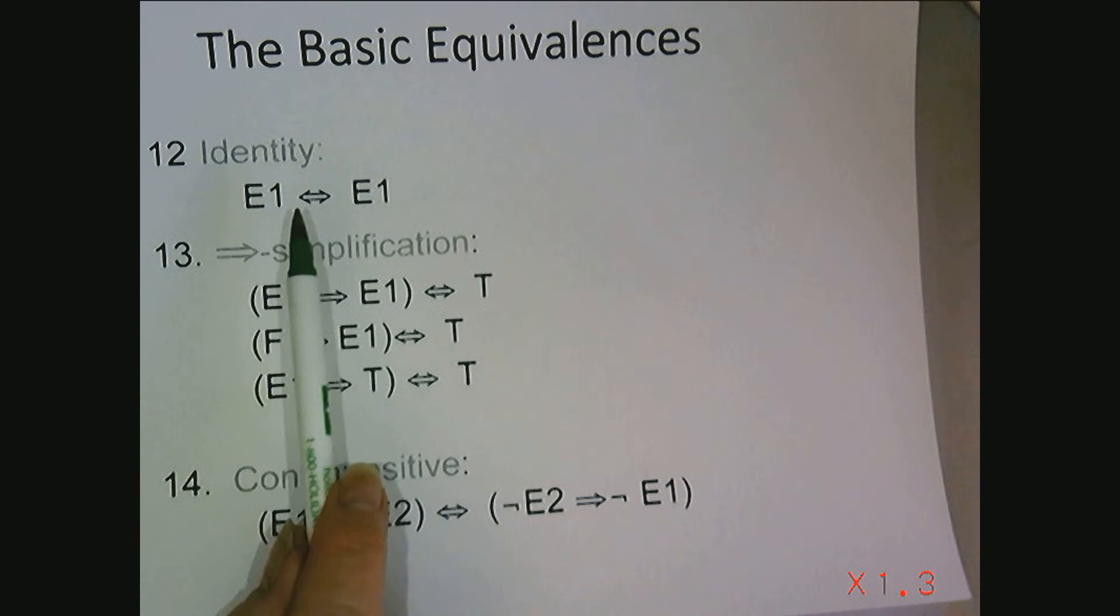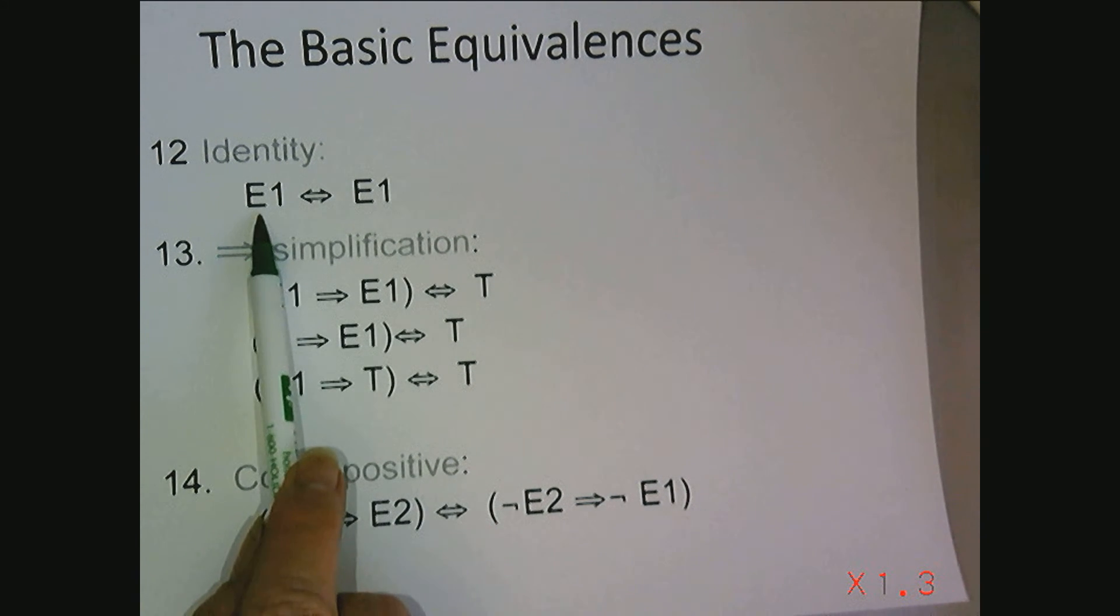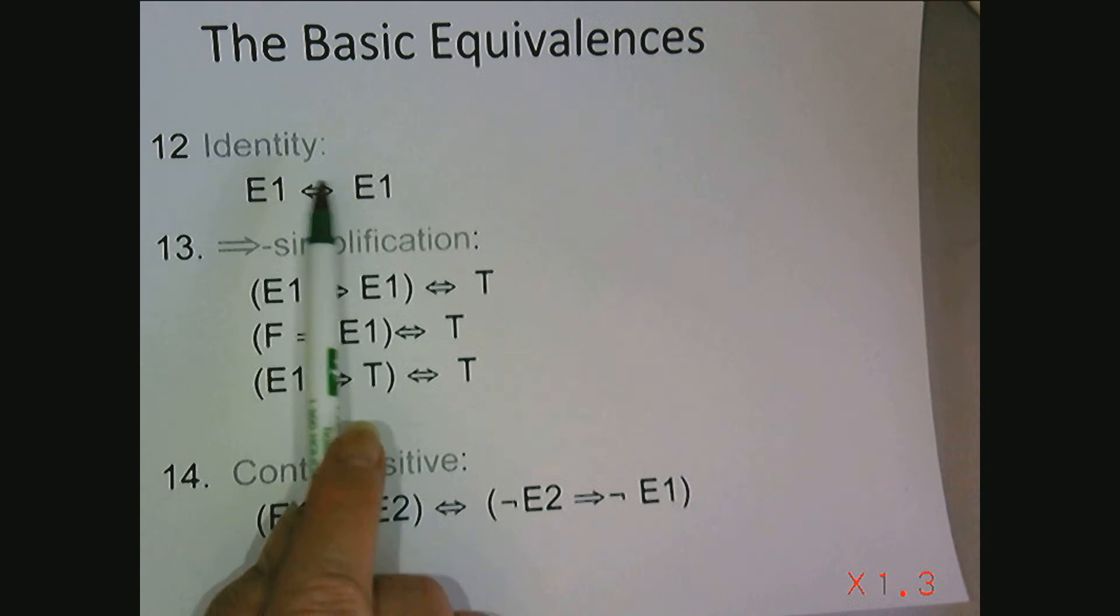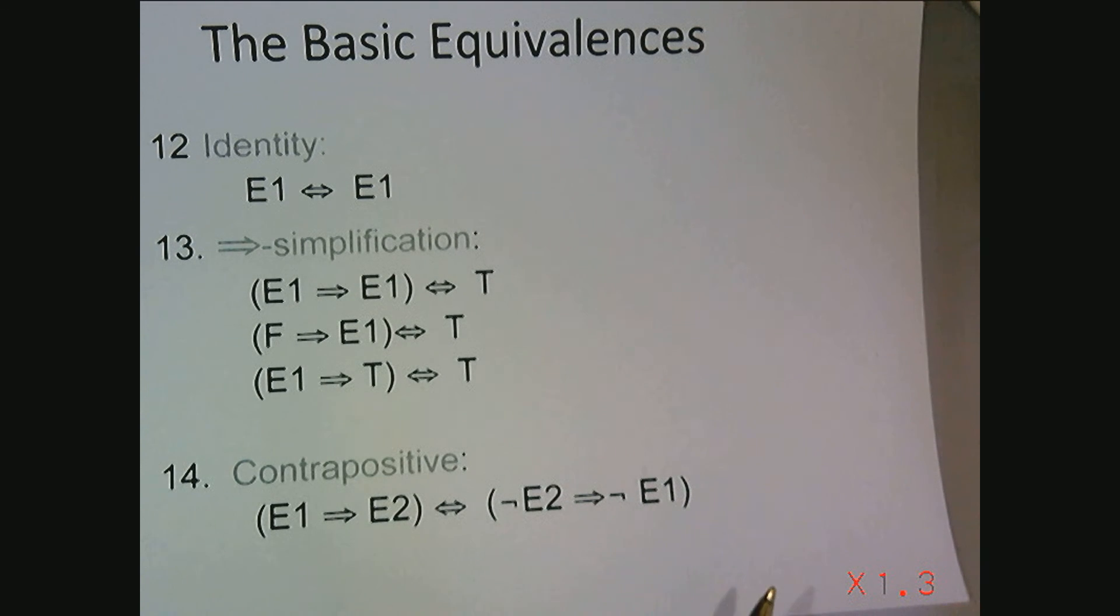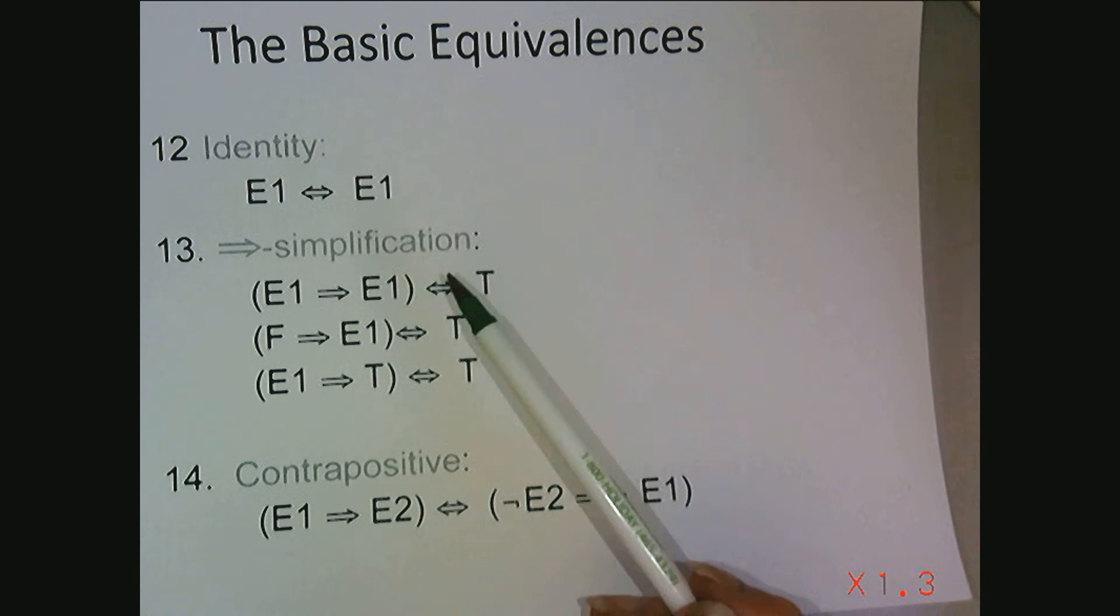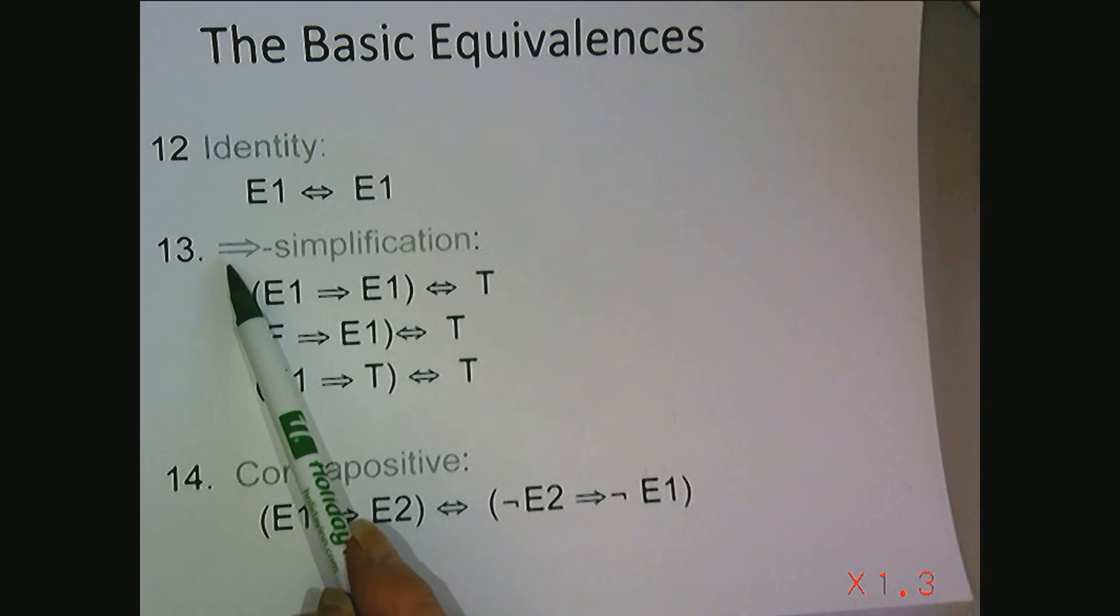Identity tells us that every expression is equivalent to itself. So often of course we invoke identity. We've added two more because especially number 13 we run into often in our work. It corresponds very much to and simplification and or simplification.